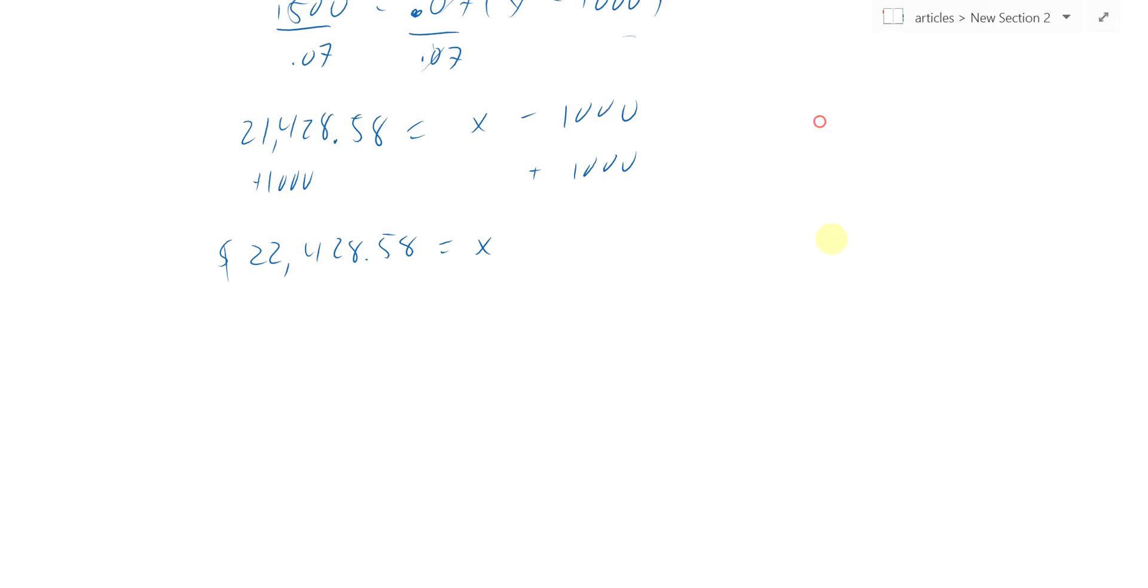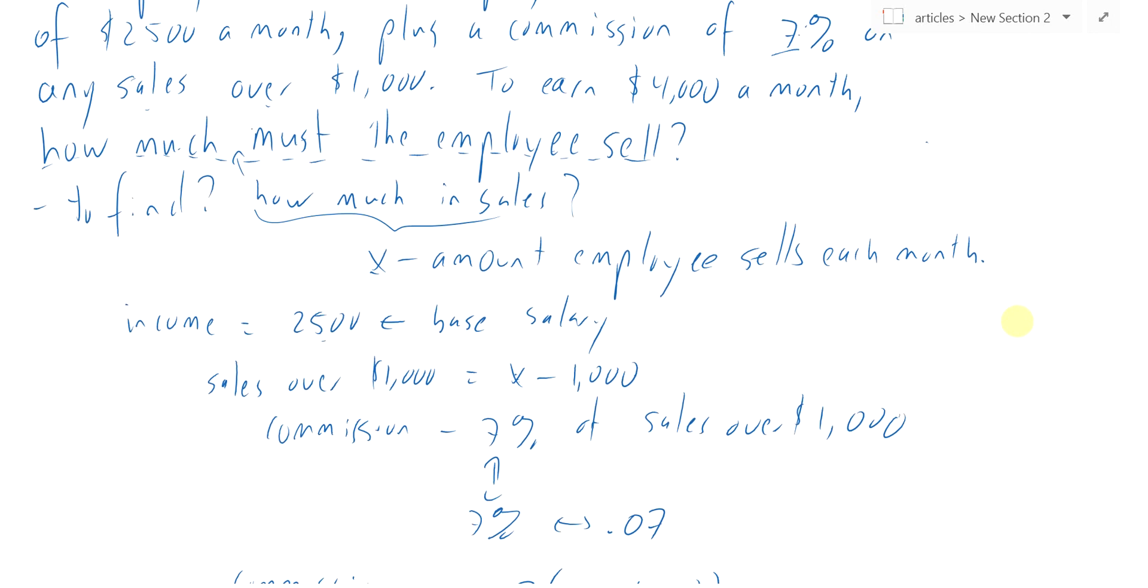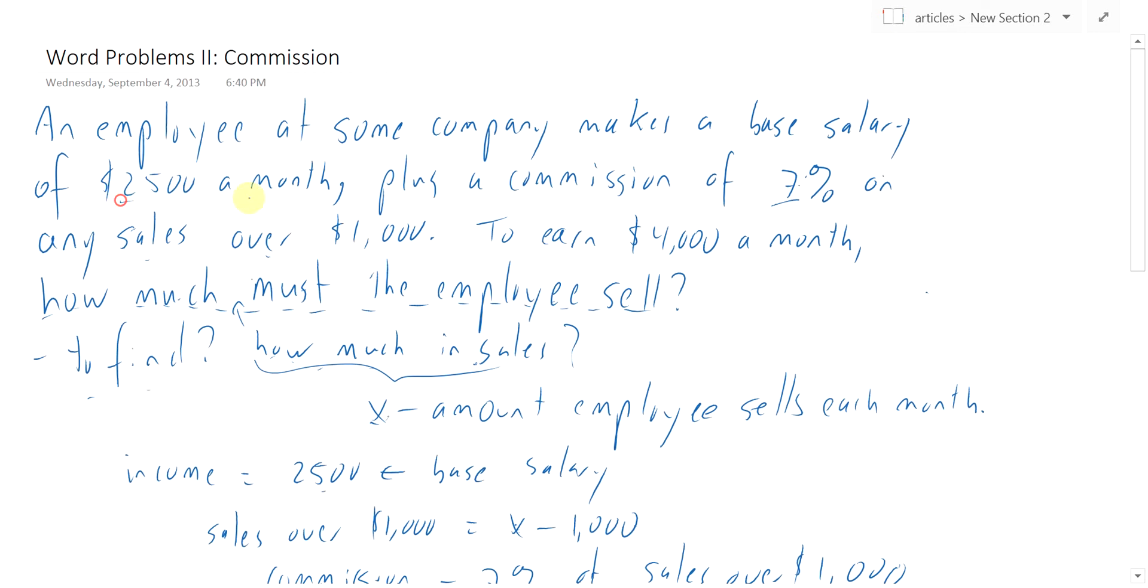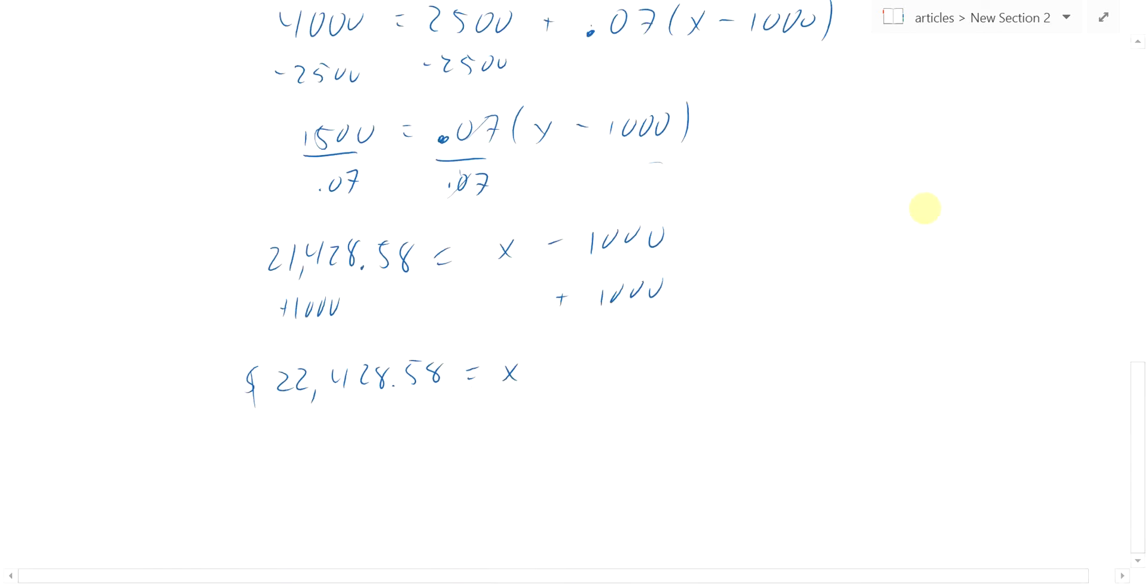So anyway, this problem, like any other word problem, start by asking yourself: what is it that I'm trying to find? Here it's how much in sales. Once you've identified what it is you have to find, give it a name. Here it's X. And then you have data in the problem. You have to use that data to set up equations. And once you have an equation, you can try and solve for your unknown, which in this case is X, and it turns out to be $22,428.